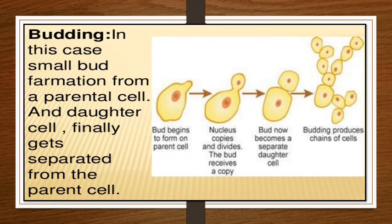In the diagram of budding, the first diagram shows the bud beginning to form on the parent cell. The bud increases in size and receives a copy of the parental nucleus, then the daughter cell separates out. This budding process is generally also observed in Saccharomyces cerevisiae yeast.